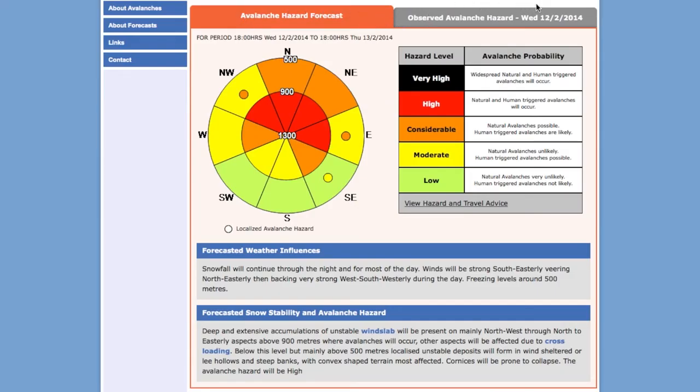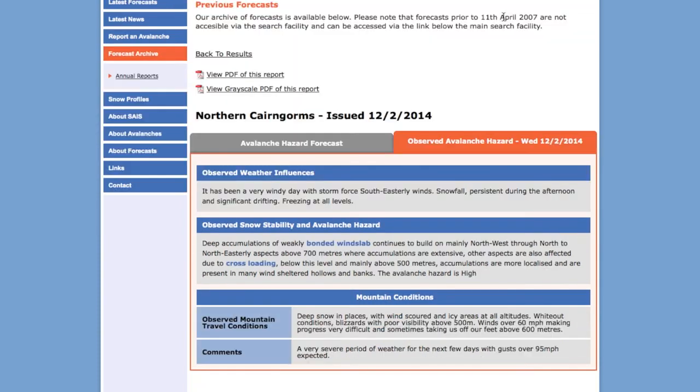The observed avalanche hazard is very, very good information, something that's overlooked, but actually that is the most accurate information that you can get from the avalanche forecasters that are out in the field. And again that will describe what the winds were doing, where the freezing level was, and what the precipitation was. So it's very clear and accurate. It will also describe what the actual situation was in terms of avalanche hazard and snowpack stability.